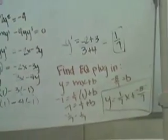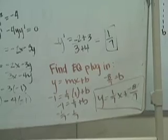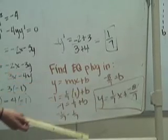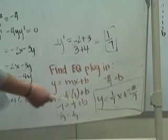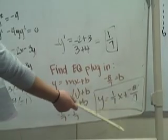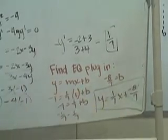And if you want to find the equation, you plug it into y equals mx plus b. And if you did do that, you would get y equals 1 over 7x plus negative 8 over 7.